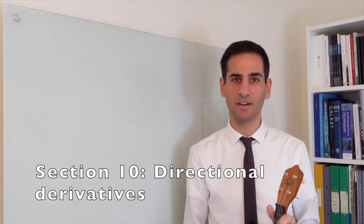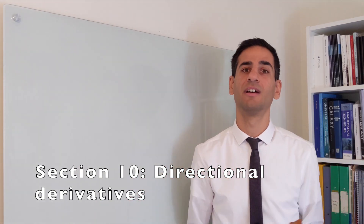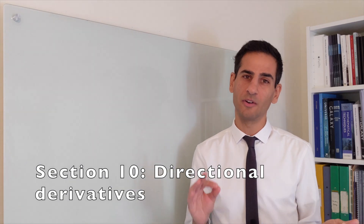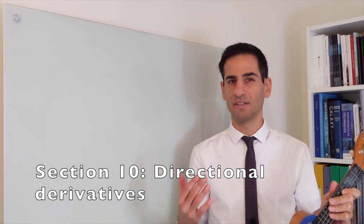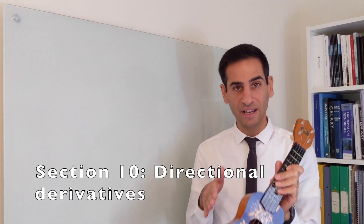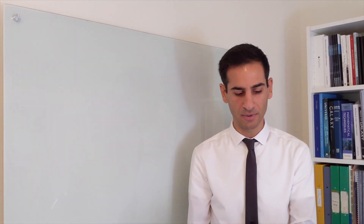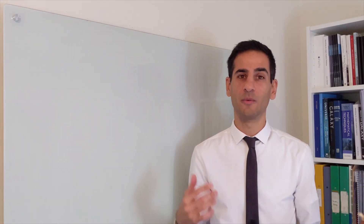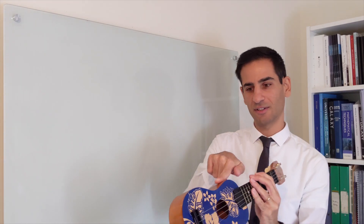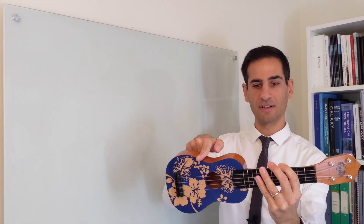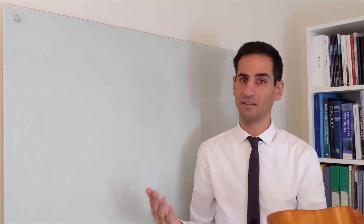And we're finally back for Section 10, the last part and section of Physics 101, where we're going to be learning how to take directional derivatives — essentially looking at the rate of change along any direction, along any curve or function of any dimension. For example, our famous ukulele, where we will finally be able to take directional derivatives, not just along this direction or this direction, but perhaps in between or in complicated paths.